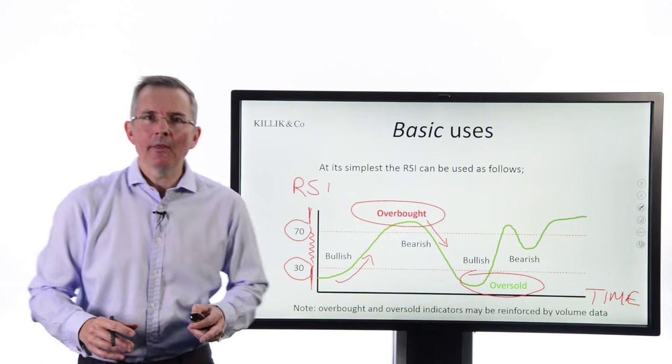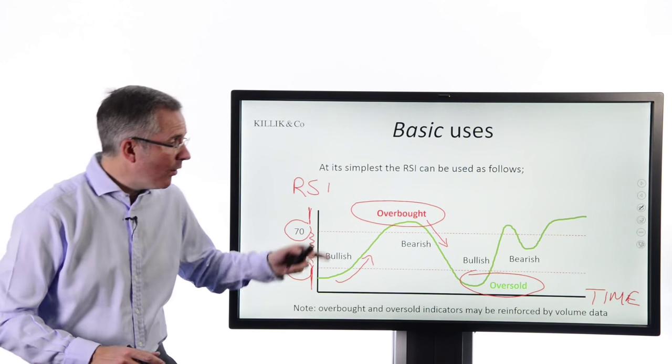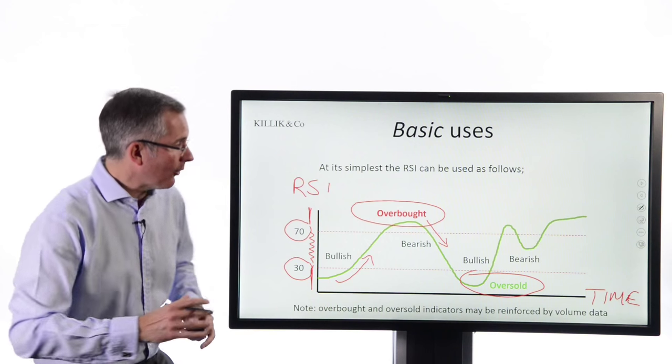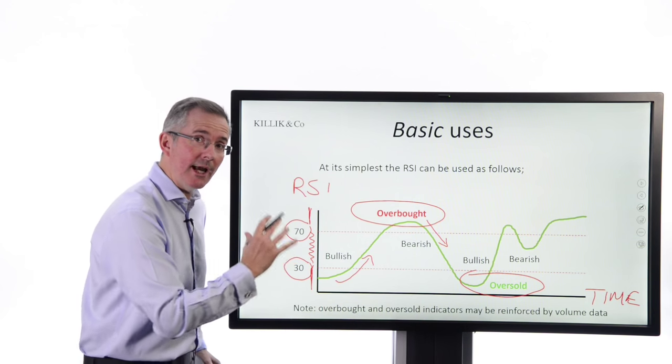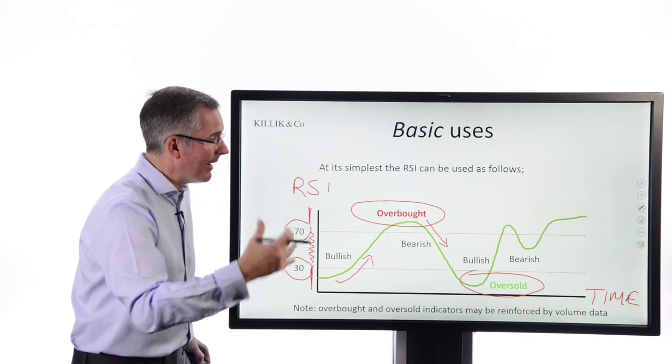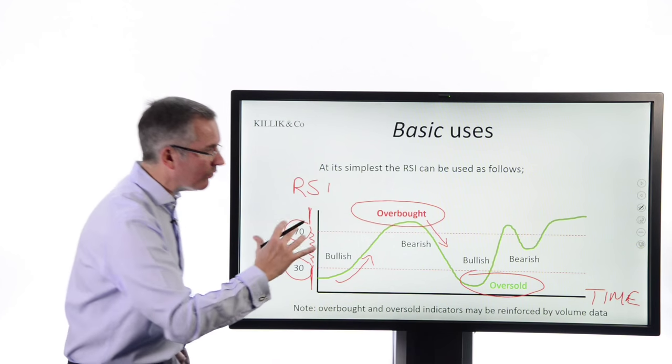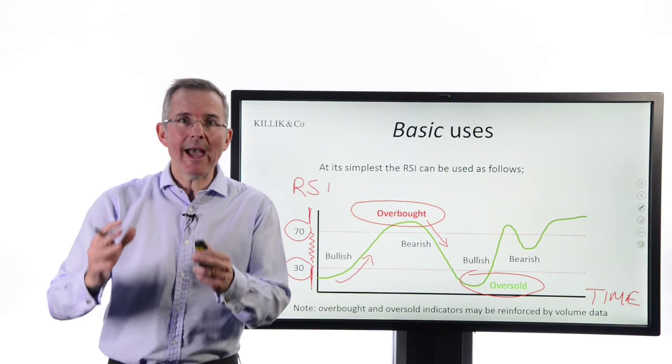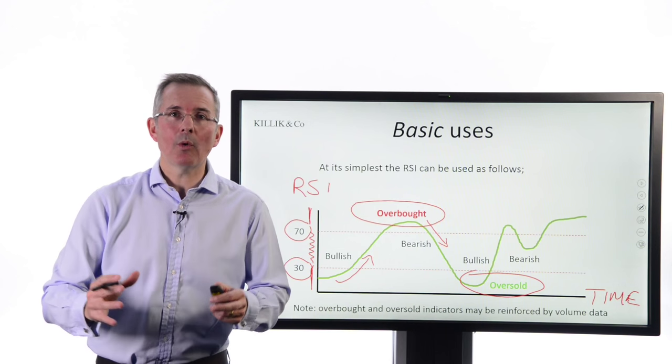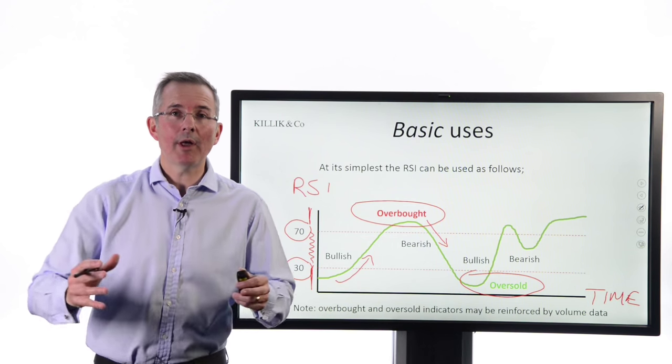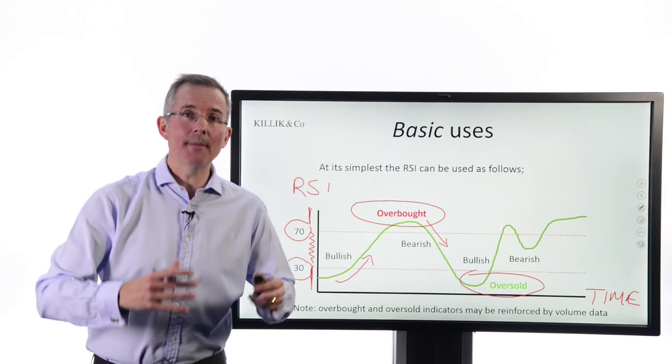And you can back up that initial reading of the RSI with volume data. So see whether volumes, this is the number of shares traded, and that information can be made available to you. See if the number of shares traded is increasing sharply or decreasing sharply. And that can give you extra meat to your argument about what's happening to the underlying stock and whether or not is a good time to buy or trim or sell.